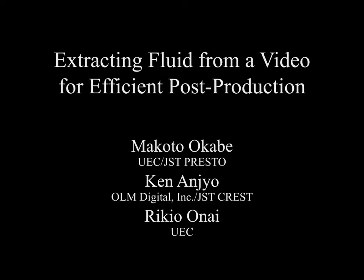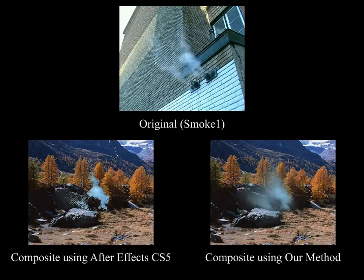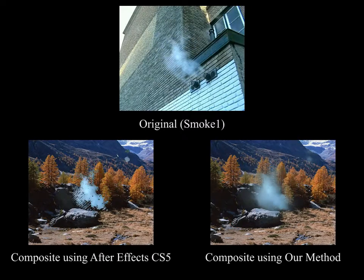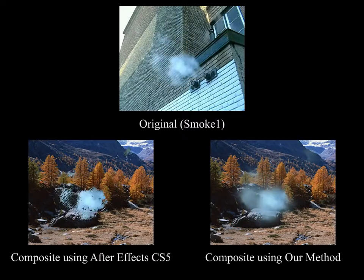We propose a method to extract fluid dynamic texture from a video. We show a comparison with the difference matte function of Adobe After Effects, which is based on simple color difference. The alpha matte created by simple color difference tends to have texture patterns of the background, like the blocks of the background wall, which our method successfully removes.